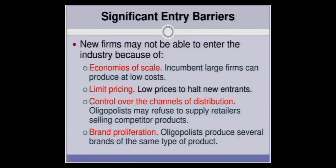Oligopolists tend to restrict entry of new firms. Incumbent oligopolists could have economies of scale, making them too large for a new entrant to compete with. They could be pricing at the lowest possible price, and new entrants won't want to sell below what their costs justify. There could also be limit pricing to keep competitors away over a long period. Oligopolists may control all channels of distribution, preventing new entrants from accessing them. Brand proliferation is another barrier — for example, Procter & Gamble provides many brands of similar products, making it very hard for new entrants.